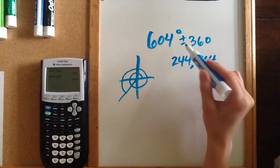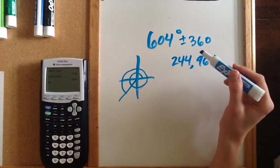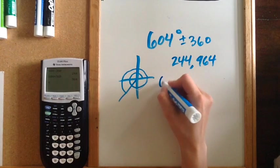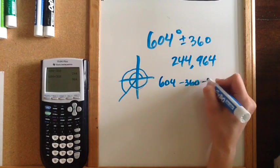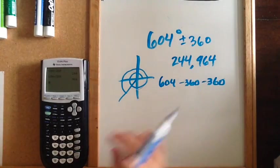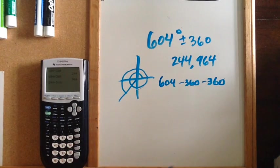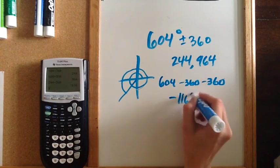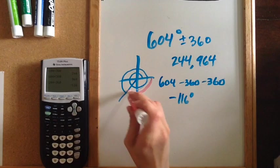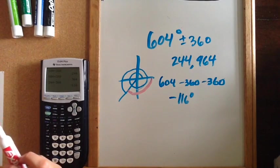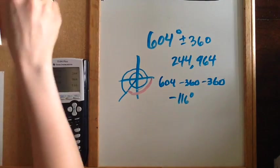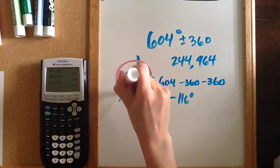So to get a negative coterminal angle, you have to subtract more than one time around. If we want our negative coterminal angle I'm going to take 604, subtract 360 and then subtract 360 again. For my class, this is still sufficient for the work, but you need to do 244 minus 360. So I'll end up getting negative 116. This is the negative 116 that we just found, and then the 244 is this one right here.